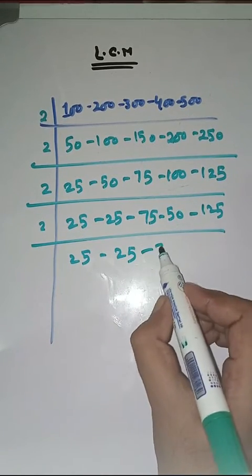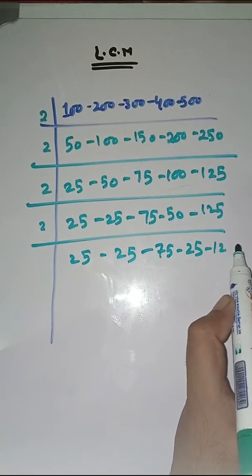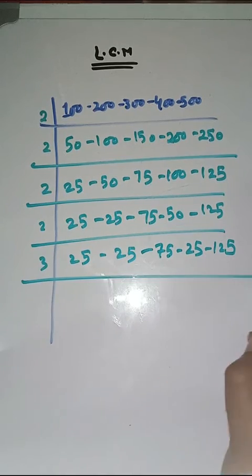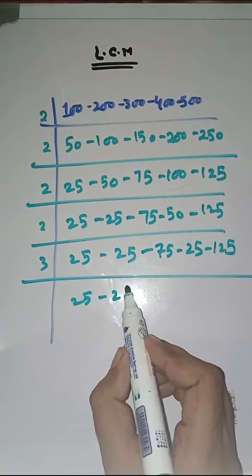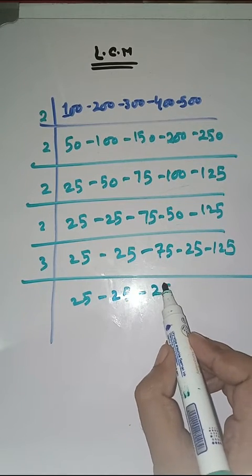Now with 3. 25 as it is, 25 as it is, 3 times 25s are 75, 5 and 15, 3 times 5s are 15.